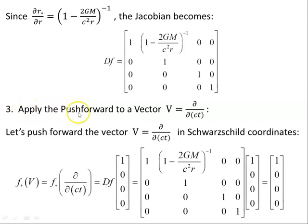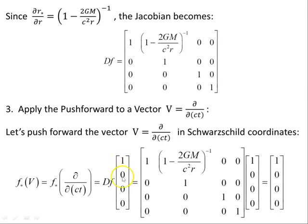Now we apply the push forward to a vector. Let's say v = ∂/∂(ct), a vector in the time direction in Schwarzschild coordinates. In component form, this is the column vector (1, 0, 0, 0). We multiply the Jacobian of f by this column vector, and we get that same column vector back as the result.